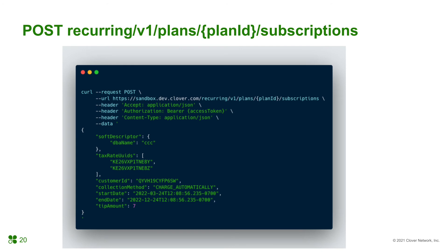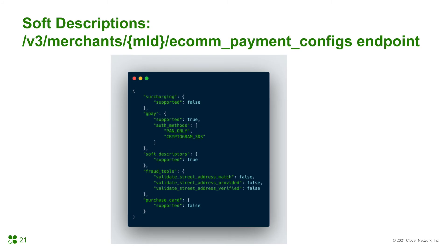Let's begin. Start by sending a POST request to the recurring subscription endpoint with your plan ID as a path parameter. The customer UUID and collection method are the important required fields. The collection method will always be charged automatically, so it is important to make sure that there is a valid card on file for that customer. Adding a price to the subscription will override the plan price for that customer; not specifying the amount will use the plan amount value. Creating a subscription will also give you the opportunity to add soft descriptions — that is, information about the business shown in the customer's card statement.